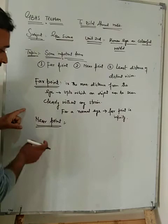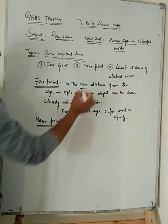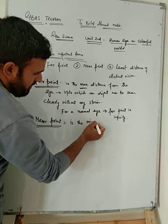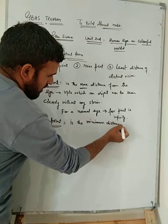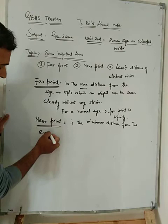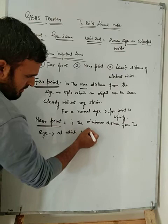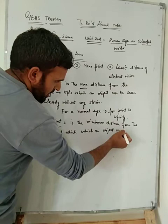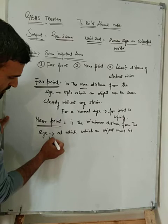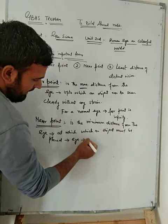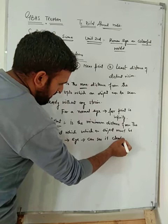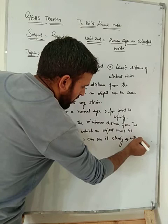Now the next term here is near point. Dear students, unlike far point which is the maximum distance, the near point is the minimum distance from the eye at which an object must be placed so that an eye can see it clearly.